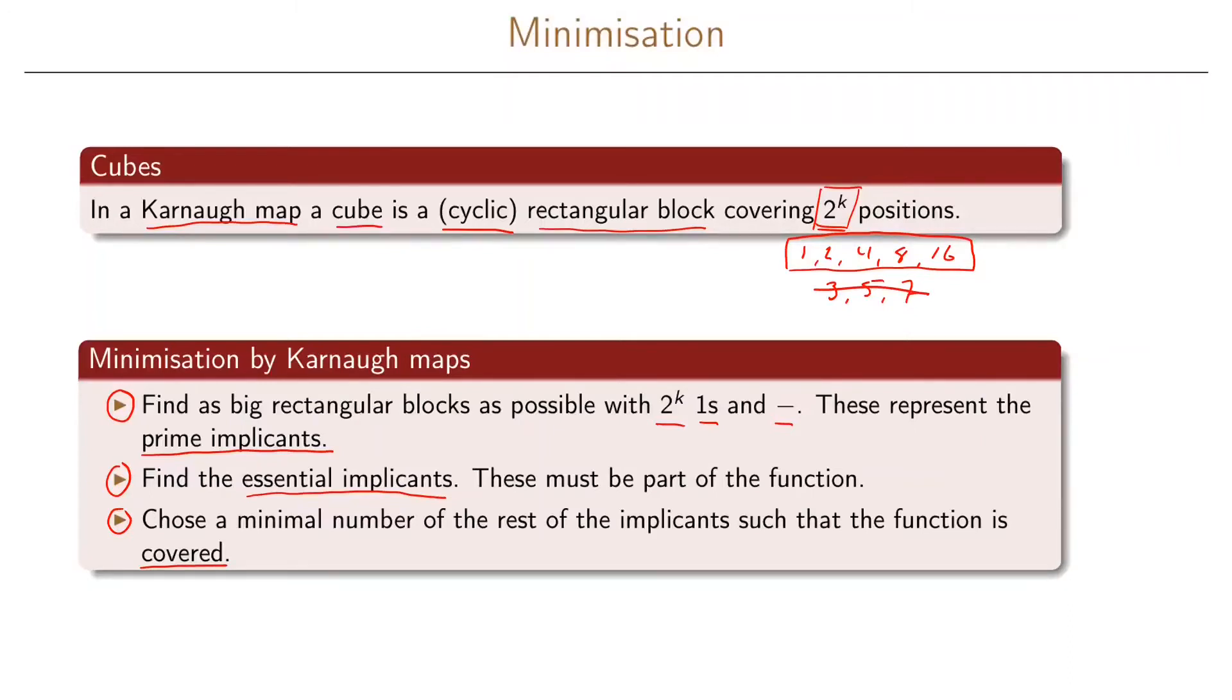And if we follow all these three steps we will have a prime cover which we wanted to have because all our implicants are prime implicants. And we will also have what we call a minimal cover because we use as few implicants as possible.